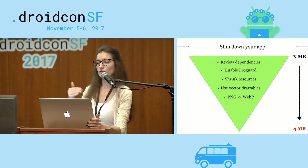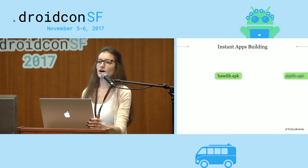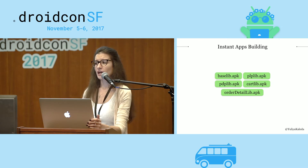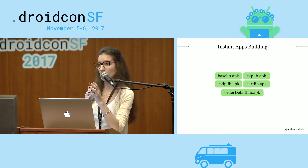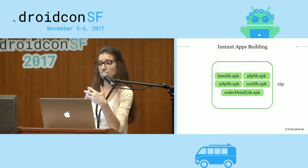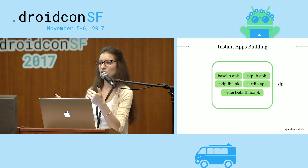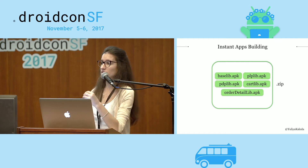The Instant App building process is very similar to a regular installable application, except instead of getting one APK, you will get as many APKs as there are feature modules plus one APK for the Base Module. Each feature is packaged as an independent APK, and all these APKs are zipped up together into a zip bundle found within your Instant App module in the build folder. After successfully building the Instant App, you take that zip bundle and push it to the Google Play Store Instant App release channel. It's then Google's responsibility to unzip and push separate APKs to the device per user request.